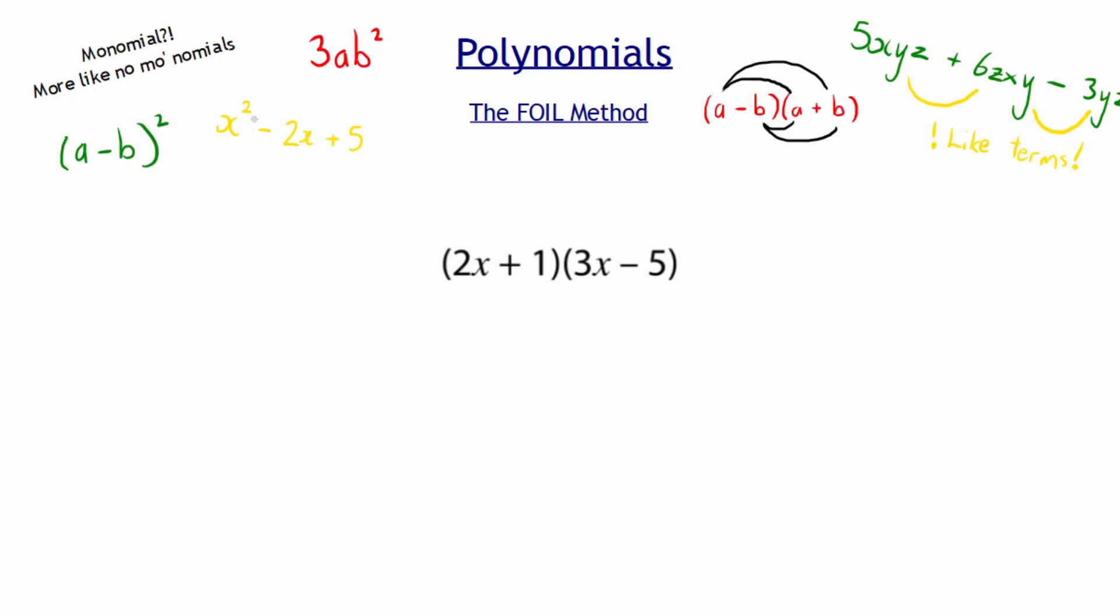This mnemonic, this method, is called the FOIL method. FOIL really means I've got these four letters and they're going to help me with something.